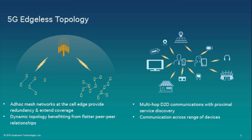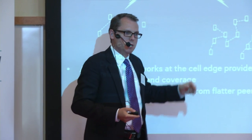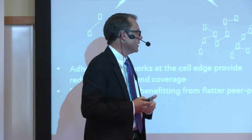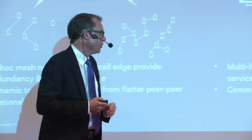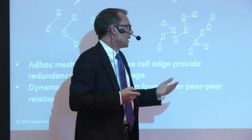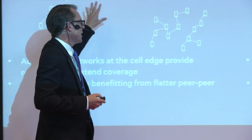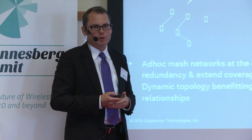We also have the concept of the 5G edgeless topology, where we explore ad hoc mesh networks at the cell edge to provide redundancy and extended coverage — a more dynamic topology benefiting from flatter peer-to-peer relationships. Instead of only thinking of downlink and uplink, we holistically look at multi-hop, device-to-device, and mesh both from a picocell-to-picocell sense and a device-to-device sense. Communication becomes more agnostic between two nodes. Multi-hop should be integrated into the design philosophy and air interface from the onset, and multi-hop D2D will leverage proximal service discovery to enable new communications across a variety of devices.